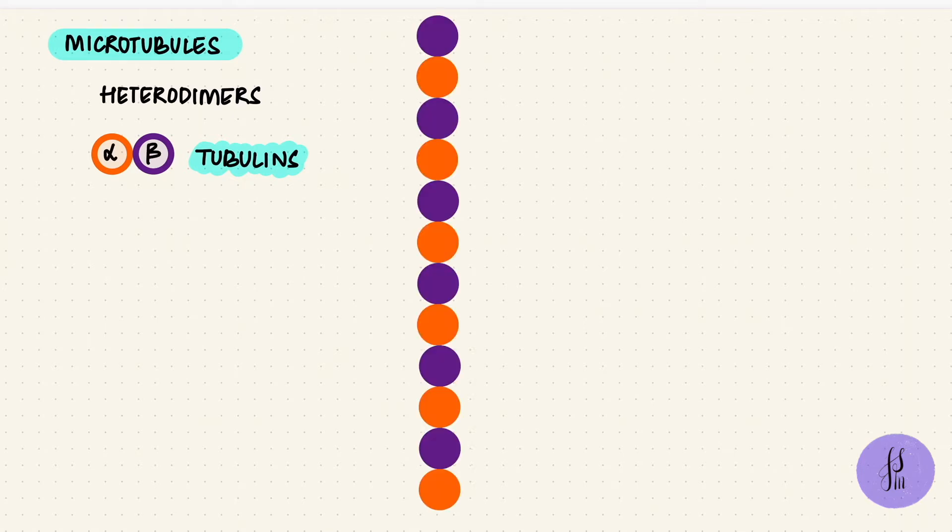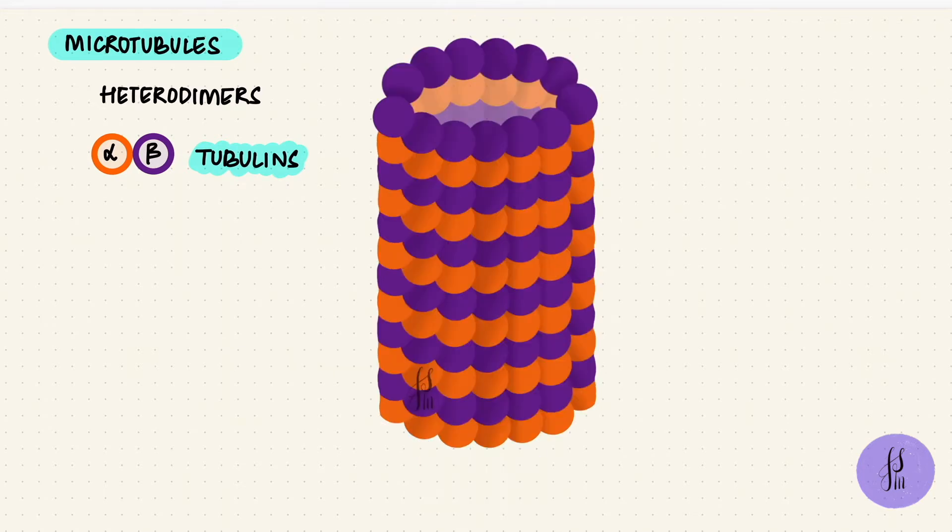With a diameter of around 25 nanometers, these are the largest cytoskeletal structures. They are heterodimers, so they have two different subunits called tubulins: alpha and beta. These dimers get stacked one above the other forming a protofilament. These then form a cylinder with a hollow center. This circle will have around 13 subunits forming the wall.